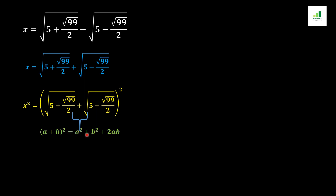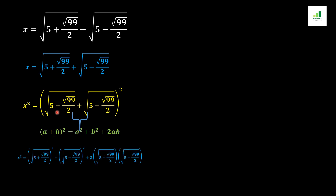The formula (a + b)² equals a² + b² + 2ab. So expanding according to this formula, we get x² = [√((5 + √99)/2)]² + [√((5 − √99)/2)]² + 2 times the product of both terms.